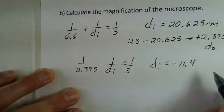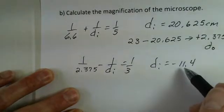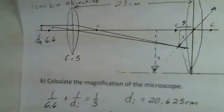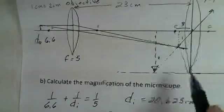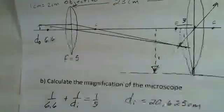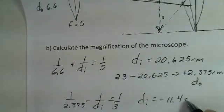That minus sign telling me that the image is on the left side of the lens. Well, that's in agreement with the ray tracing. The number here, 11.4, is a little bit further back, but at least the ray tracing has the image on the correct side of the lens.